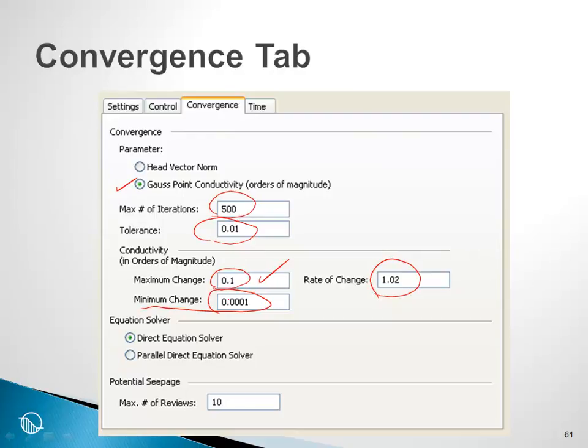Of course, the more steep the function, the more difficult to get convergence. So if this is the conductivity and this is negative pore pressure, and our conductivity is extremely steep, we will have a lot of difficulty getting a converged solution. If the slope is somewhat flatter, we don't nearly have the same difficulty.